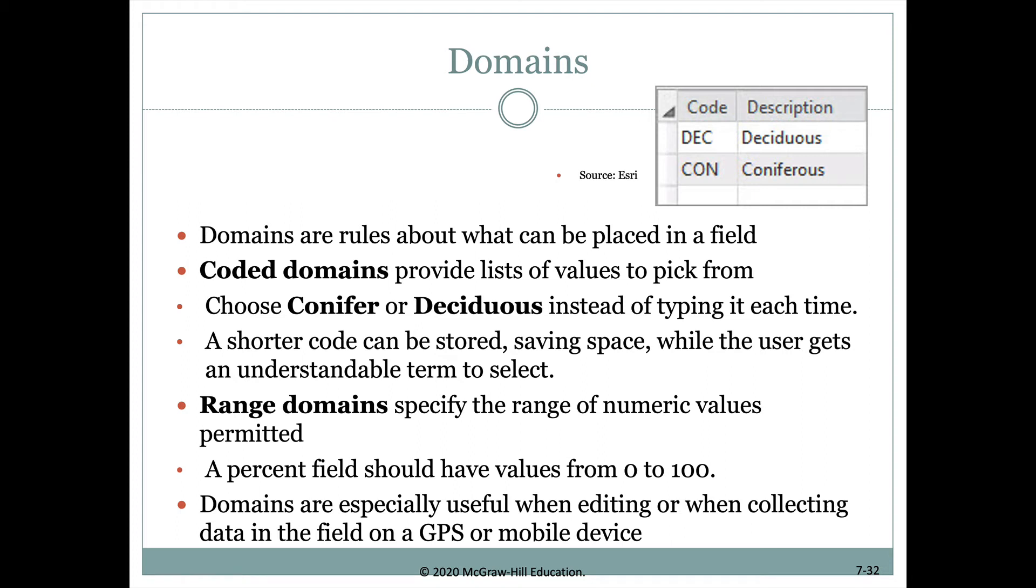Entering data into an attribute table is something you could simply type in, but sometimes when entering data from a mobile unit like a GPS or mobile device, you just want to give the person inputting the data some choices. And that's why we use domains.